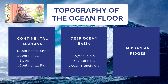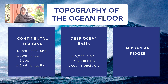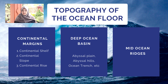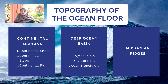Now I'd like to move on to the topography of the ocean floor. Topography of the ocean floor has three components. First, continental margins, which includes continental shelf, continental slope, and continental rise. The second is deep ocean basin, which includes abyssal plains, abyssal hills, ocean trenches, and seamounts. And the last is mid-ocean ridge.